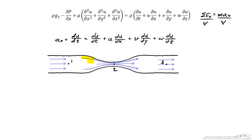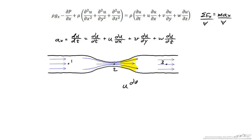Let's examine the constricting region: u is a positive quantity moving from left to right, and ∂u/∂x is also positive, so the convective acceleration term is greater than zero — the fluid element is accelerating from left to right. Conversely, in the expanding region, although u is positive, ∂u/∂x is less than zero, so the fluid is slowing down and the convective acceleration term is negative — the acceleration is to the left in that region.